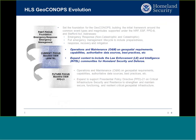The program started well before I got here — I came over in January. The program is in a multi-phase evolution. In the past, the goal was to set a foundation for the GeoConOps, guided by the GIOT. It started as a foundational framework looking at common event types under the NRF, ESF, PPD-8, and Stafford Act, initially addressing emergency response and non-catastrophic incidents, then expanding into catastrophic events, and then into the full emergency management lifecycle covering the five mission areas: preparedness, response, recovery, and mitigation.